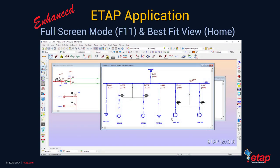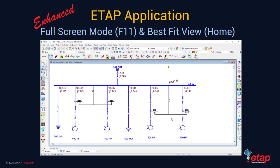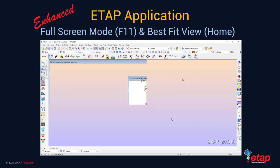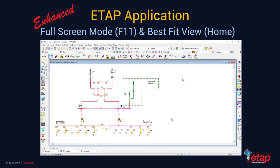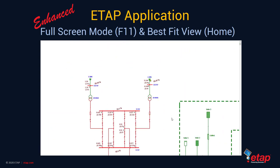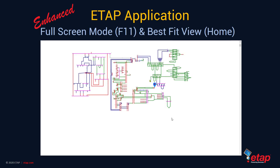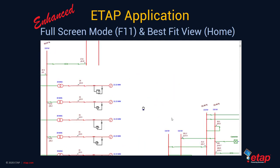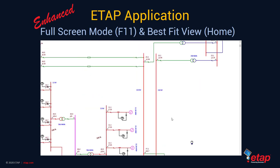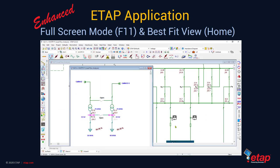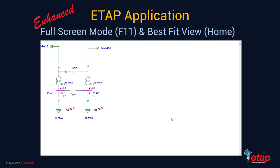ETAP20 also includes two new shortcuts — F11 for full screen mode and Home key for best fit view. Pressing the Home key allows you to best-fit the diagram within the ETAP application canvas, and pressing F11 eliminates all surrounding information and zooms into the one-line diagram, star view, underground raceway view, or control system diagram view that you want to focus on. You can use this in presentation mode to teach colleagues or students and eliminate additional information that may not be necessary for the discussion at hand.